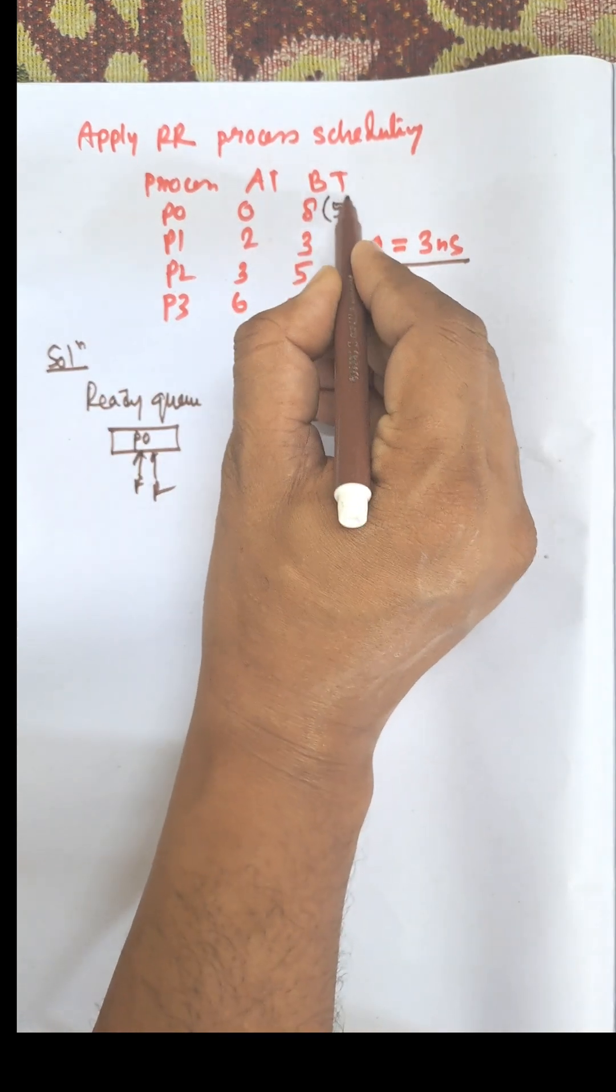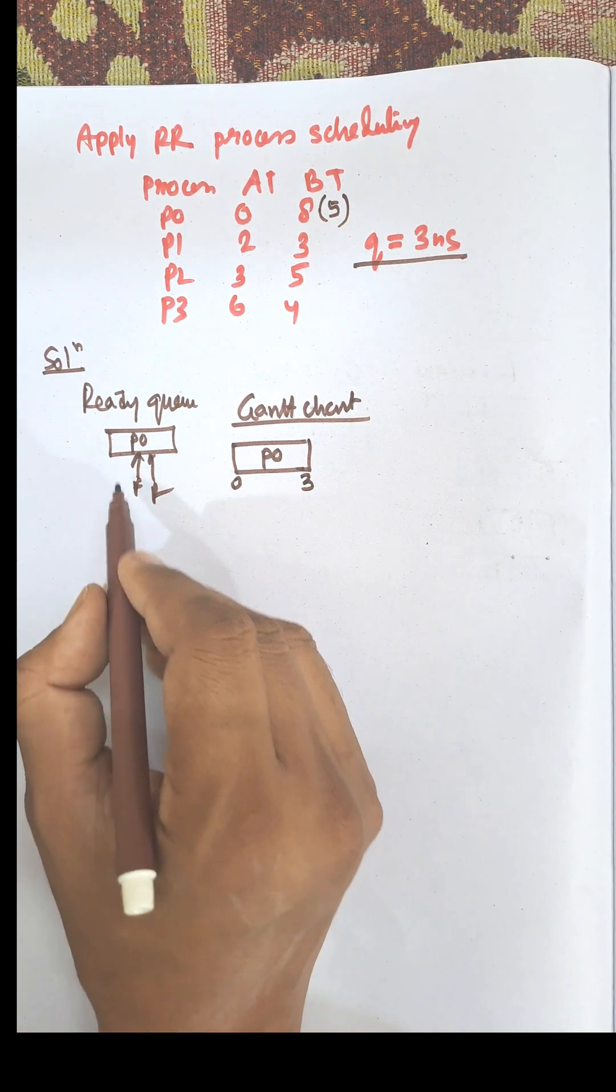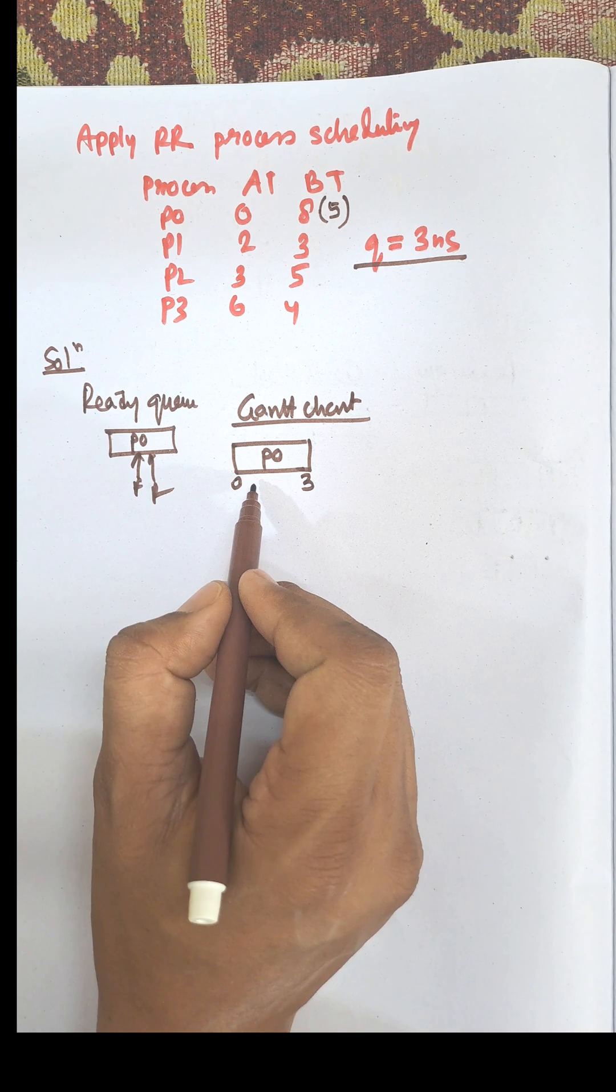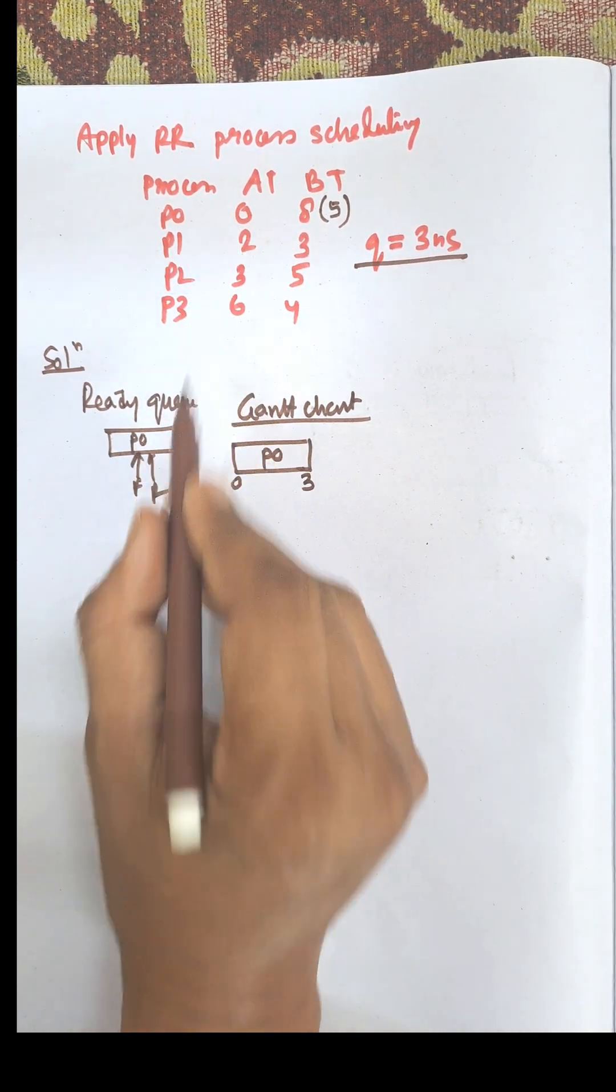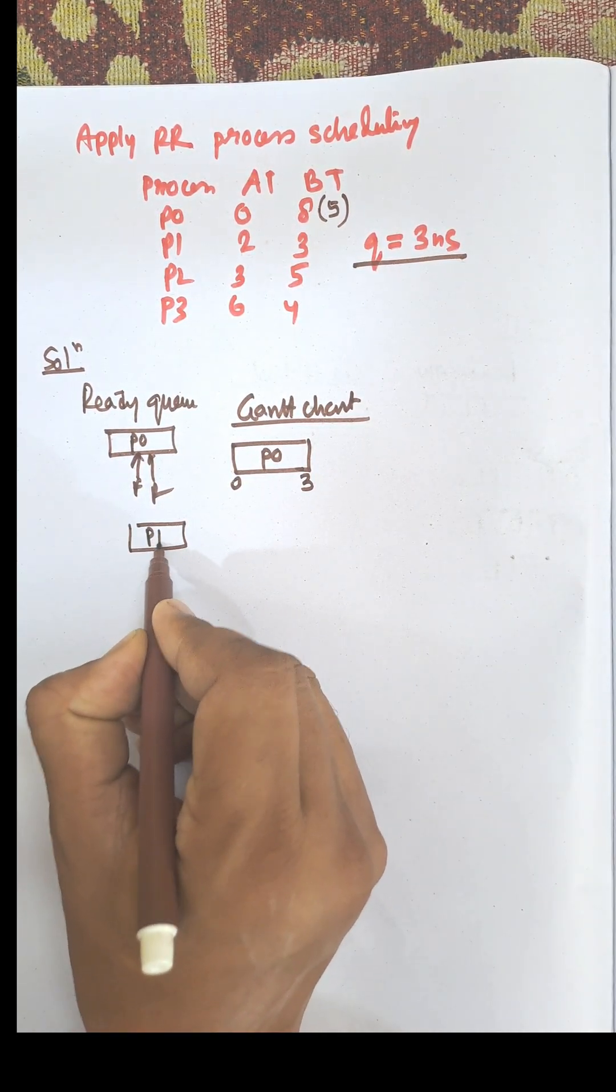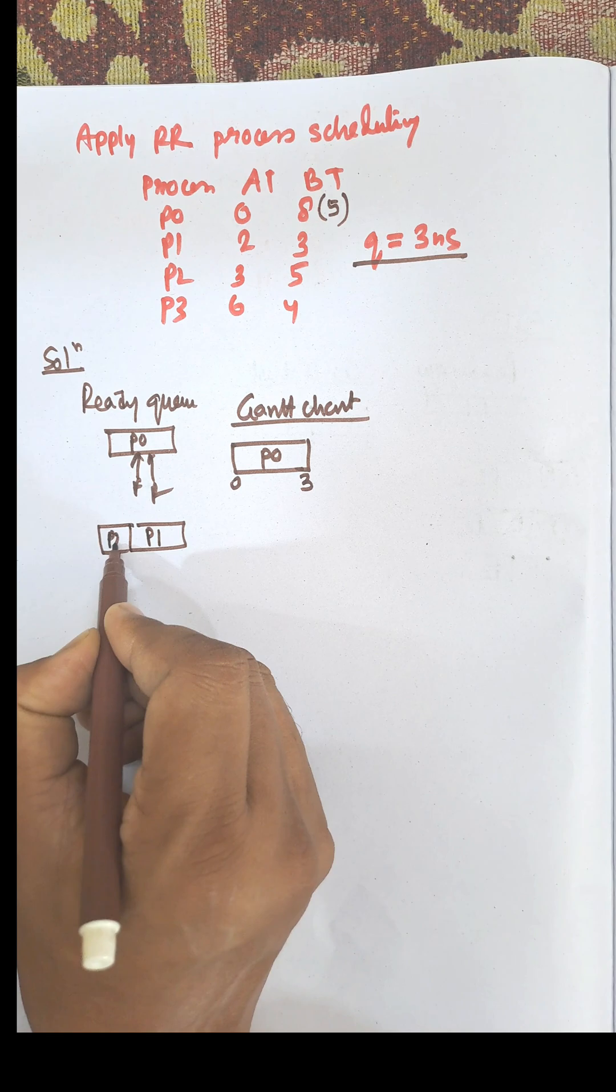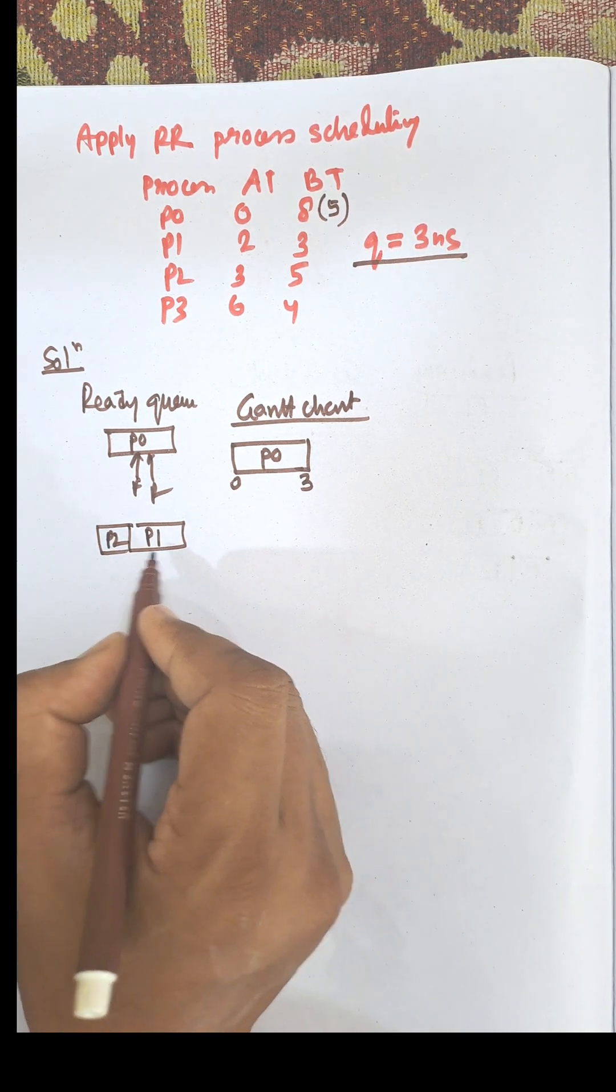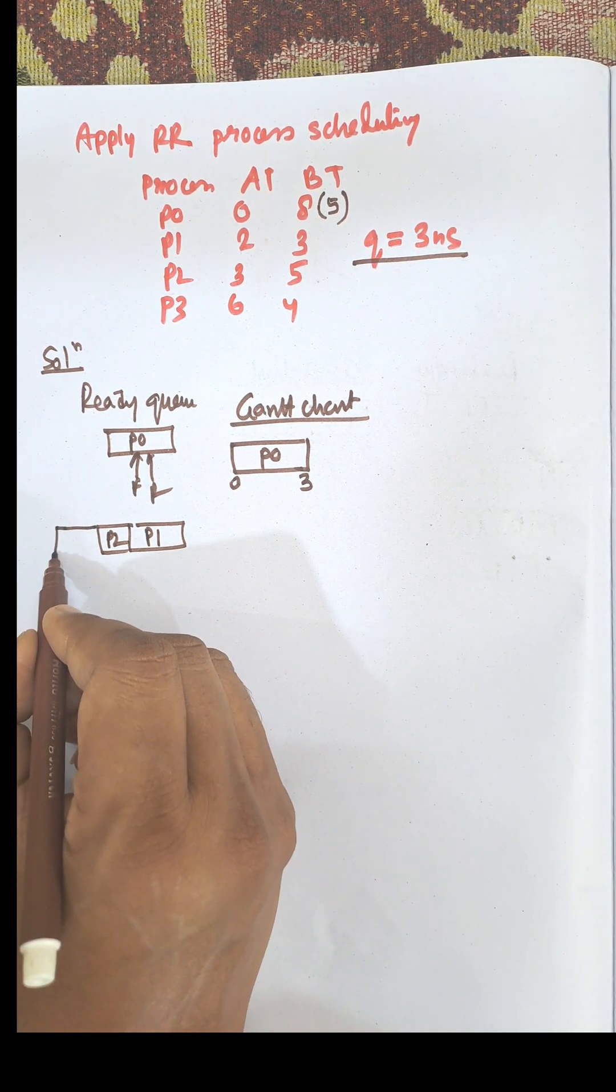Now remaining time is 5. P0 will be preempted, and during this period P1 and P2 have already arrived. P0 will be preempted to the end of the queue, which is known as a circular queue.